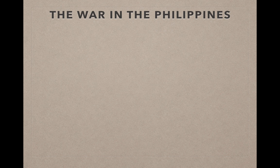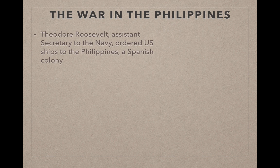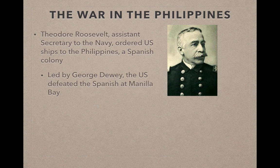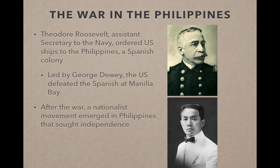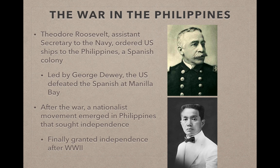The war was fought on two fronts — one in the Caribbean and the other in the Philippines. Theodore Roosevelt, as assistant secretary of the Navy, ordered U.S. ships to the Philippines, a Spanish colony. They were led by George Dewey, and the U.S. defeated the Spanish at Manila Bay in the Philippines. After the war, a nationalist movement seeking independence emerged, led by Emilio Aguinaldo. The Philippines remained under U.S. control from 1898 until independence was finally granted after World War II in 1946.